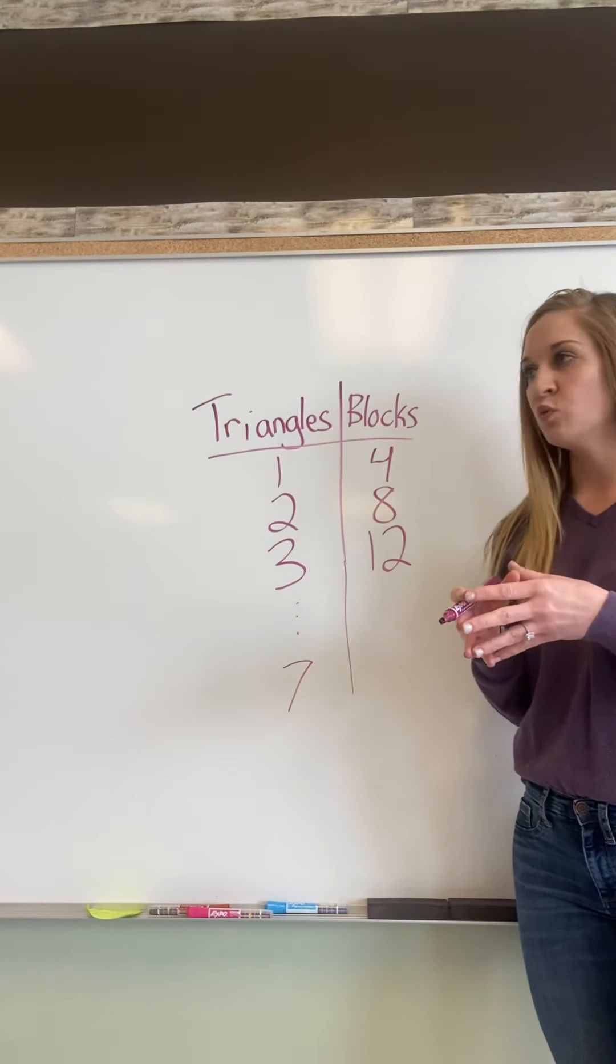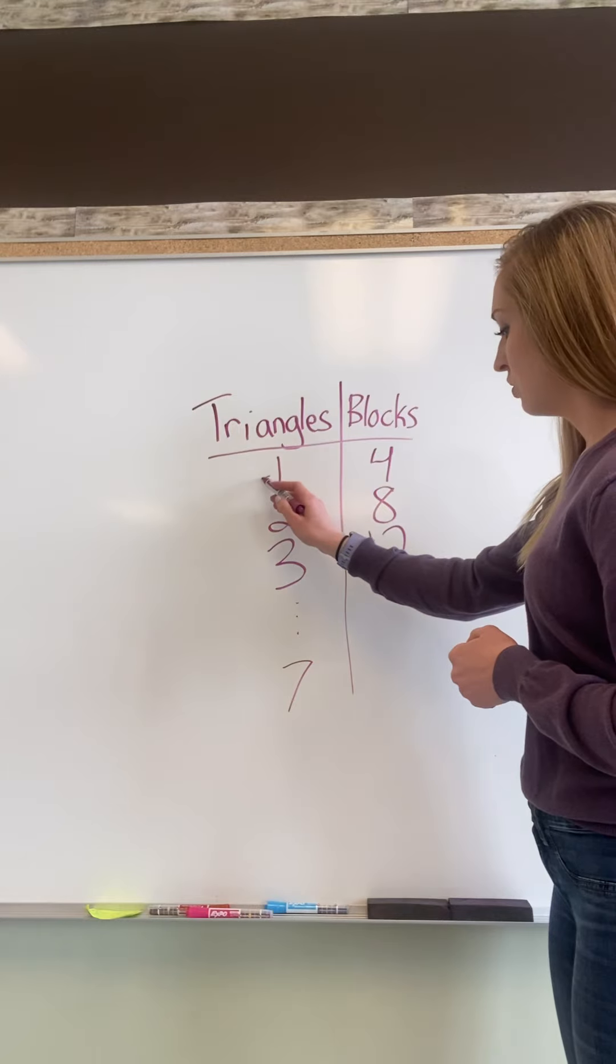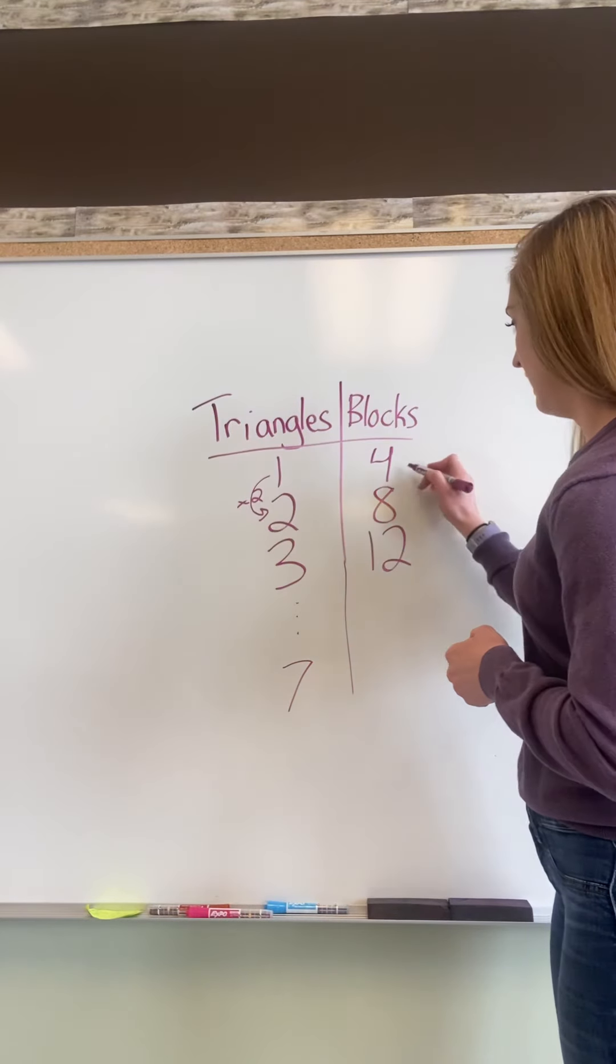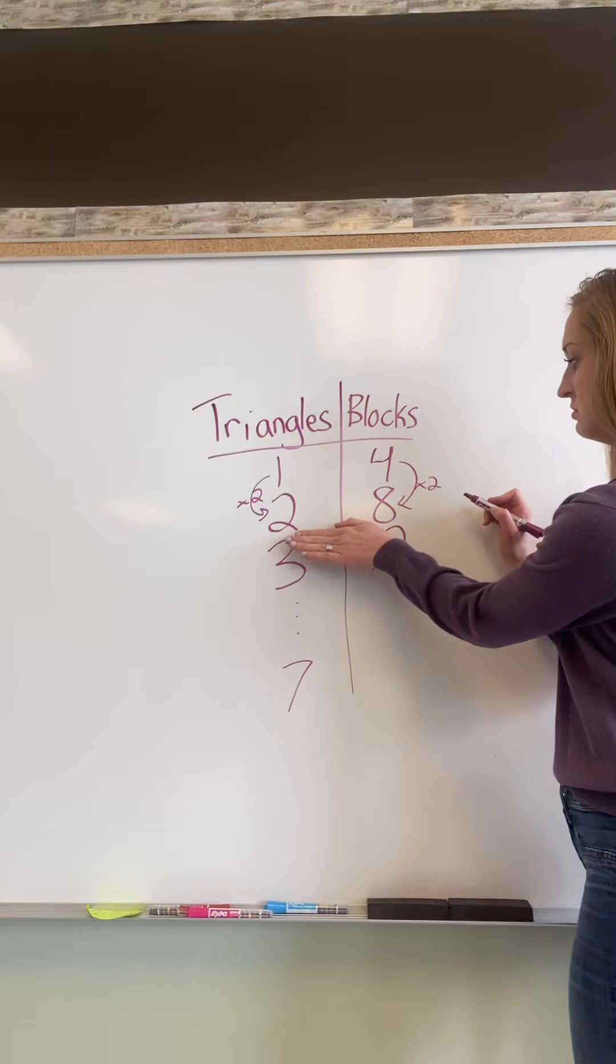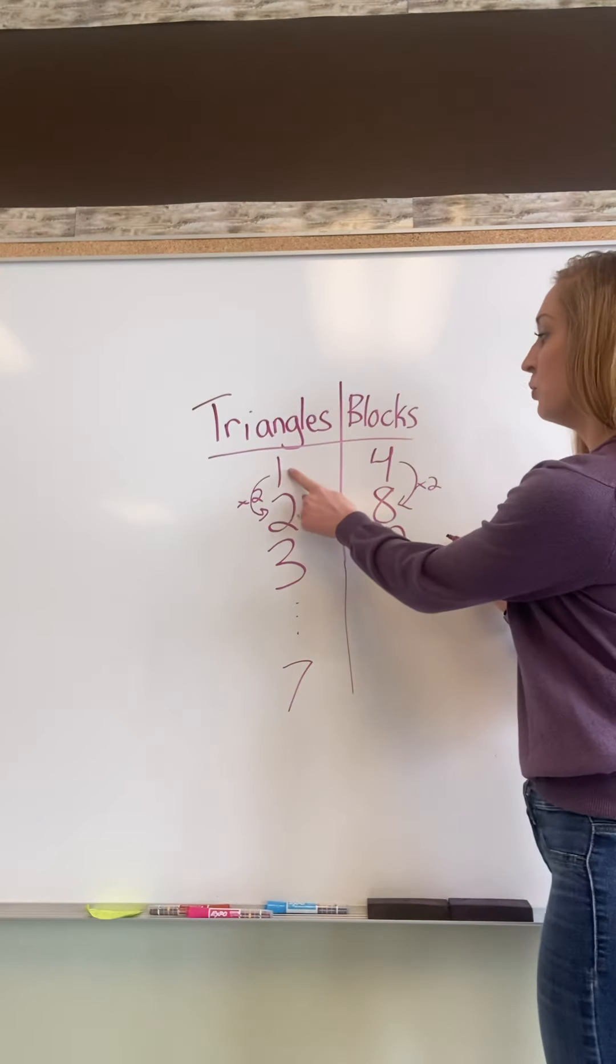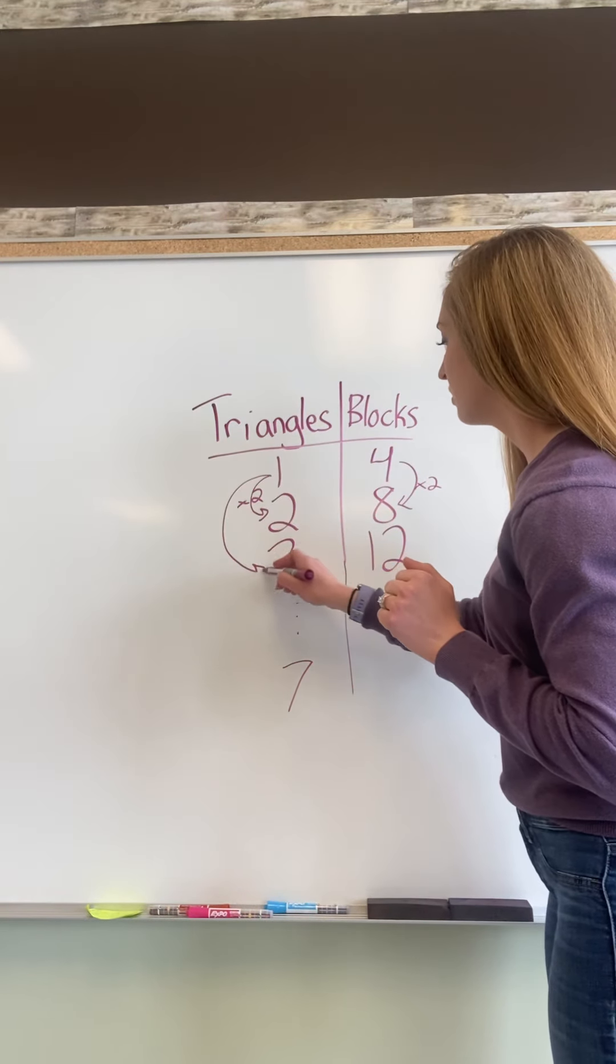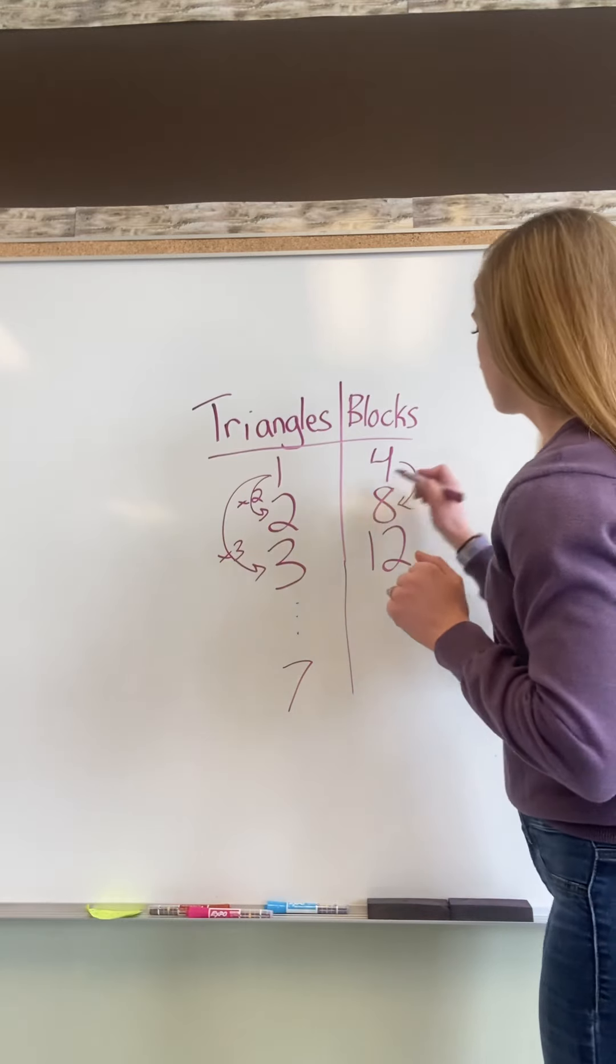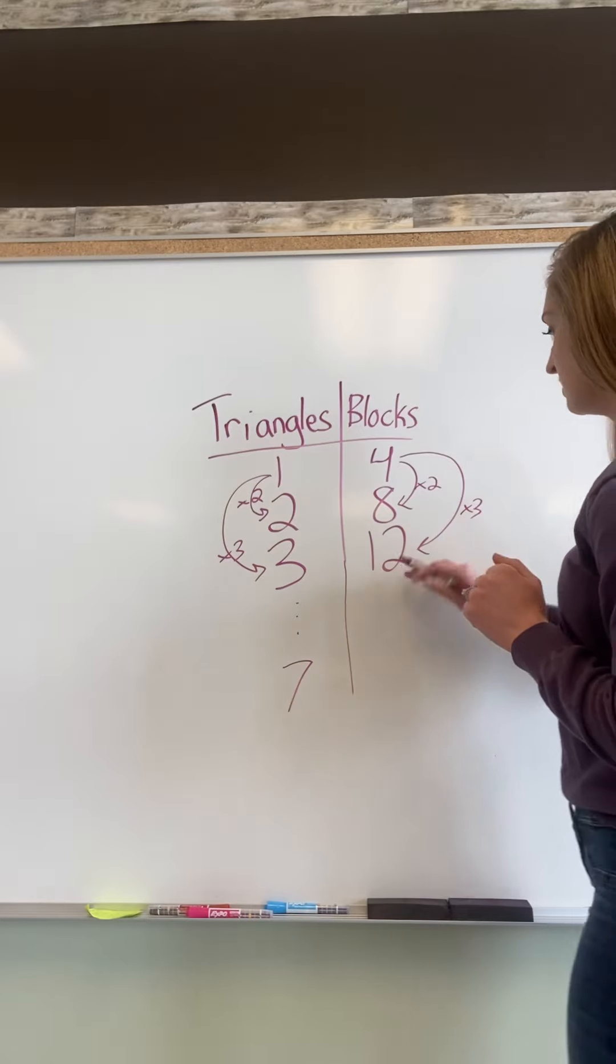So with ratio tables, it's really important that you know that I'm going to multiply this by two and multiply this by two to get the next set of numbers. Now instead of looking at this number that I have, I'm going to go back up to the top, to the beginning number, and now I'm going to multiply that by three. And then four times three is twelve.